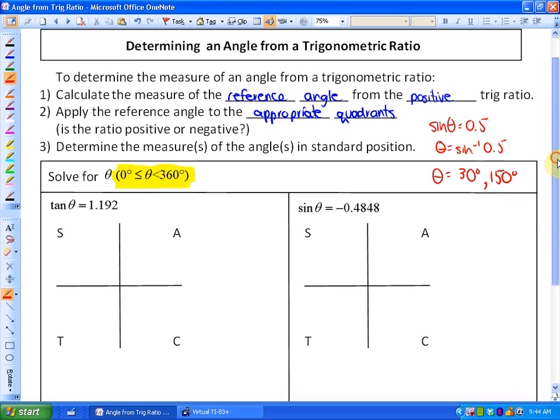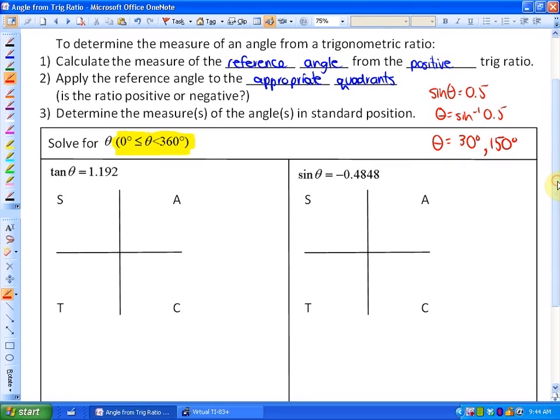So let's just look at two examples. Example number one says solve for θ between 0 and 360, for tan θ being 1.192. The first thing we want to do is recognize that tan is positive. So that means that we would anticipate having answers in quadrant 1 and quadrant 3, because that's where the tan ratio is positive.